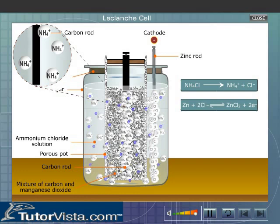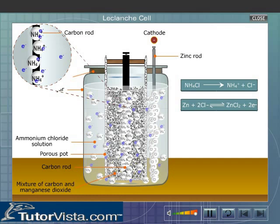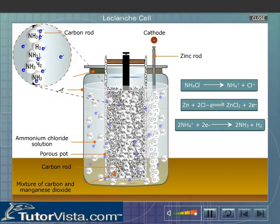On the other hand, ammonium ions move to the carbon rod. The free electrons of the carbon rod neutralize the ammonium ions, forming ammonia and hydrogen gas. As a result, the carbon rod attains a positive charge due to the deficiency of electrons. Thus, the carbon rod becomes the anode, the positive electrode.